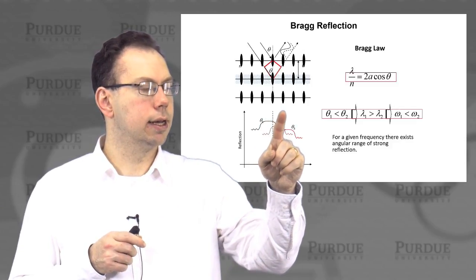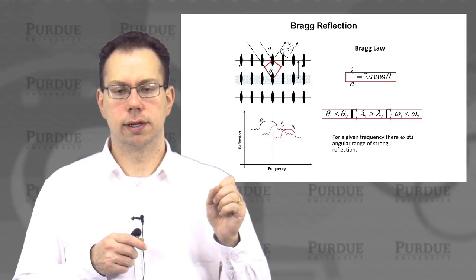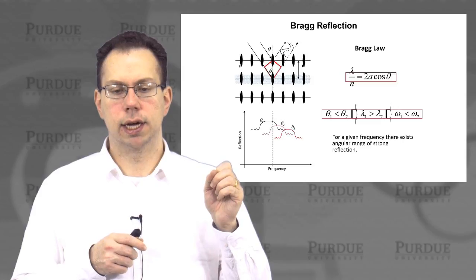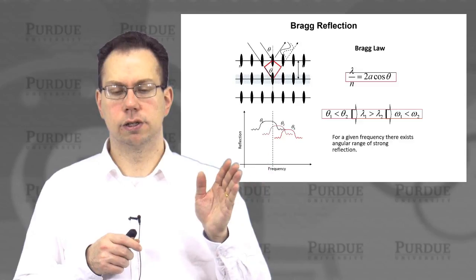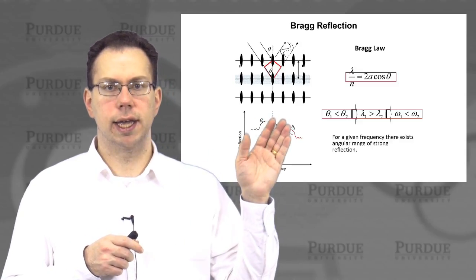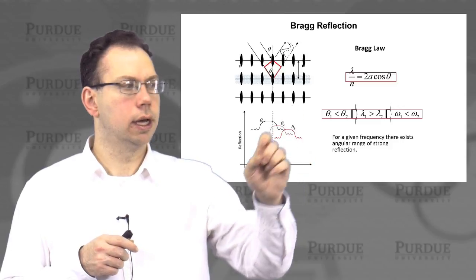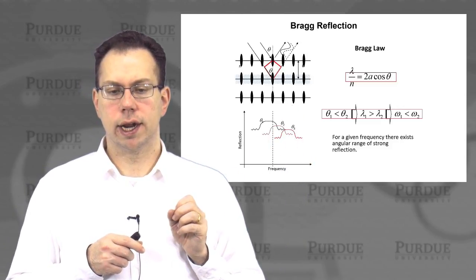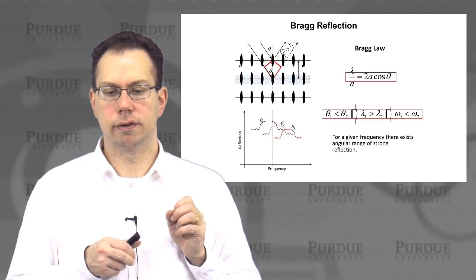And those wavelengths and angles are dictated by the Bragg law, which basically says that the first order and higher order wavelengths are dictated by twice the period A in the lateral direction, times cosine of the angle of incidence theta. So that's basically shown here. And then you can see that if you have two different angles, then there will also be two different wavelengths that are being refracted.